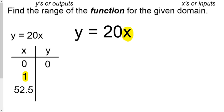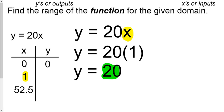And then we come back and we do the same thing again. We take the 1, we plug it into the equation. Since it's multiplying, I multiply it. y equals 20.